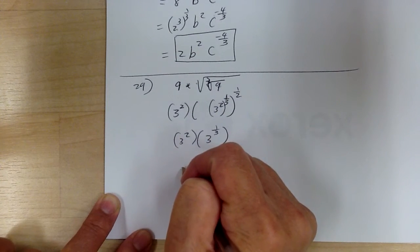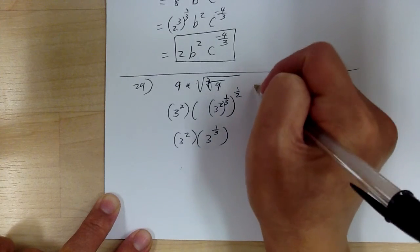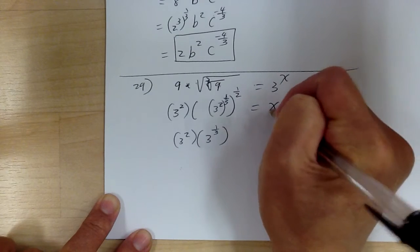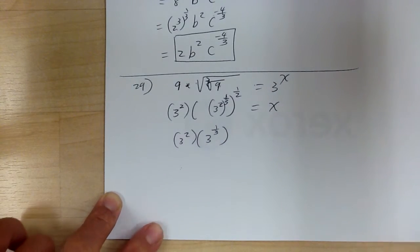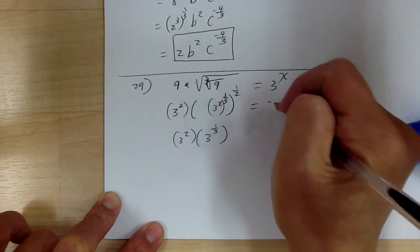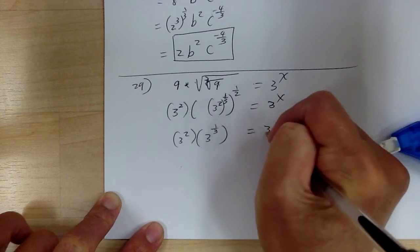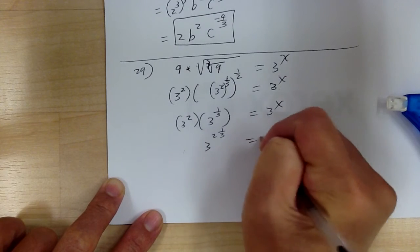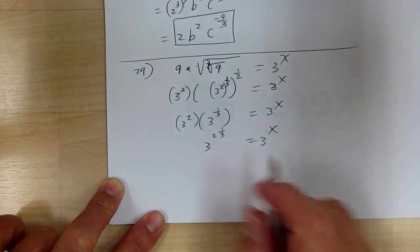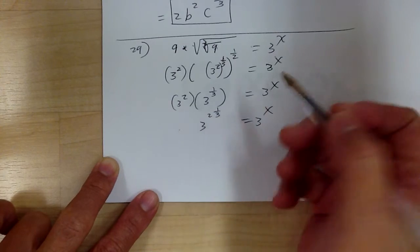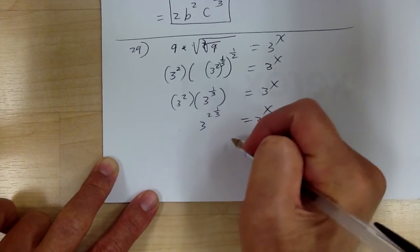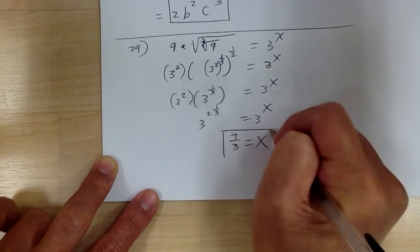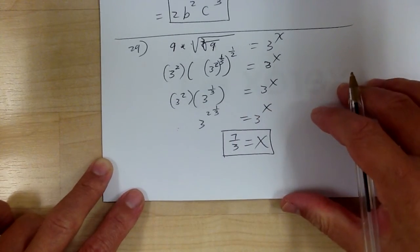So this becomes 3 to the 2 and 1 third. Normally you stay away from mixed numbers, but since you already have it, just leave it. Or if you want to, you can convert it to a proper fraction. Either way. That's it for number 29.